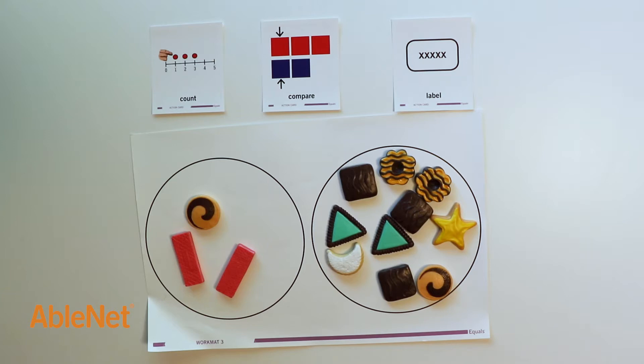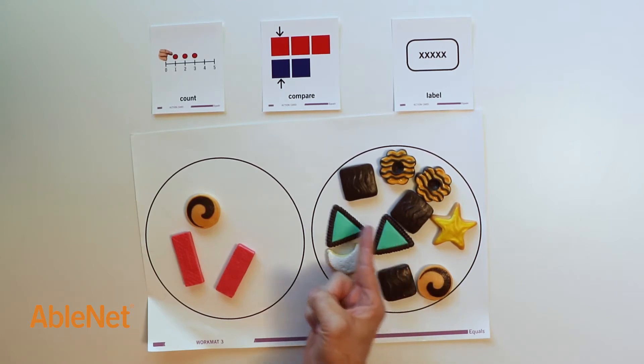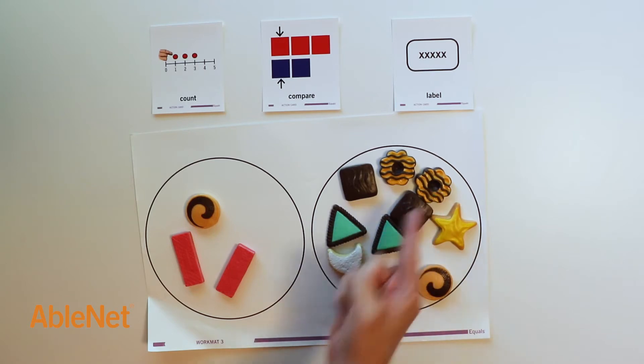I will start by counting the cookies on each plate. One, two, three cookies. One, two, three, four, five, six, seven, eight, nine, ten. Ten cookies.